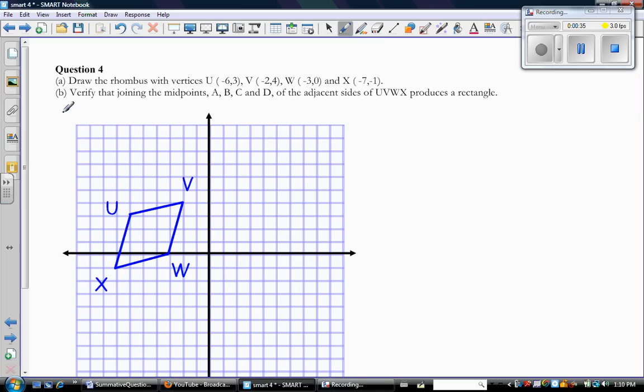Now part B. It says verify that joining the midpoints, called A, B, C, and D. So if I join the midpoints of adjacent sides of this rhombus, I should get a rectangle. Okay, so let's take this step by step. I obviously need the midpoints. So midpoint, midpoint, midpoint, and midpoint. There's my midpoints.